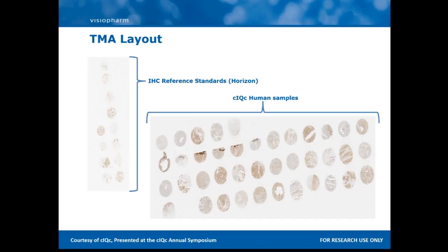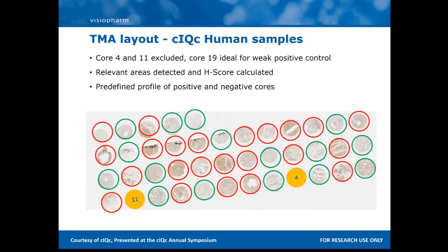The challenge for us is to create something that can handle both cases and do an equally good analysis on both, even though there is variation. The first step was to pick out the CIQC human samples and develop an algorithm to reproduce the scores delivered by the CIQC. Looking closely, we can see various negative and positive cores distributed throughout. The negative cores are highlighted green, the positive ones are highlighted red, and ones excluded due to a high dropout rate are circled in yellow. Notably, core number 19 is quite ideal for use as a weak positive control.